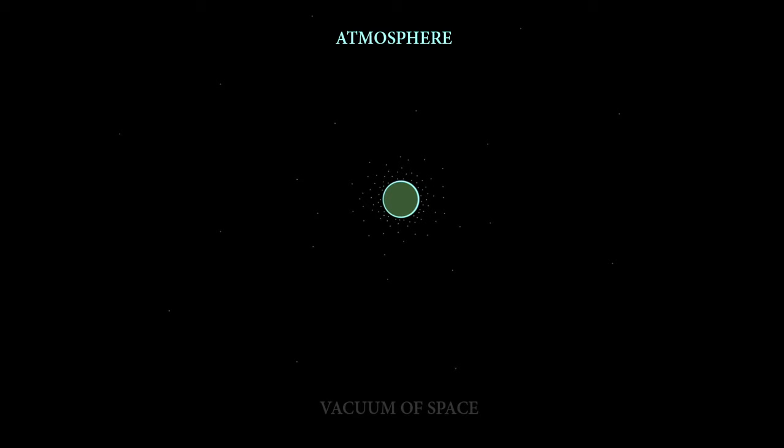So I want to visualize this vacuum. We got our atmosphere in light blue, then we have the vacuum of space. And we're just sitting in a vacuum, right? That's what we're doing. Just spinning around in a vacuum.